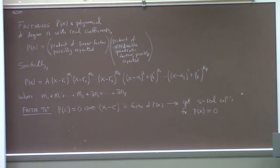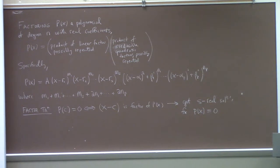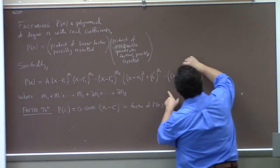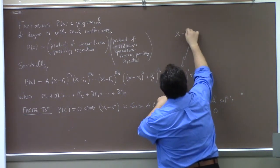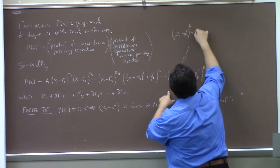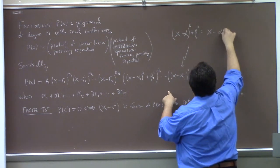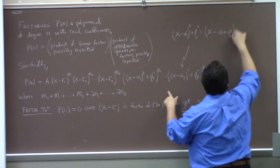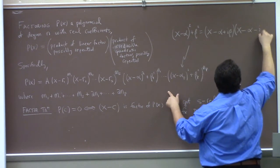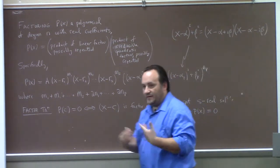What if we also allow complex solutions? The real number part stays the same, but if we can work with the square root of minus one, that allows us to split the irreducible quadratic pieces. Each one of these — (x − α)² + β² — can be split as (x − α + iβ)(x − α − iβ), and we can do that for each of the complex factors.